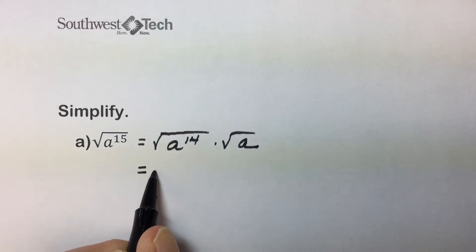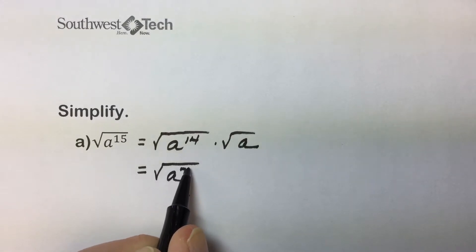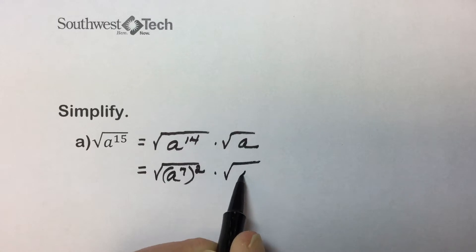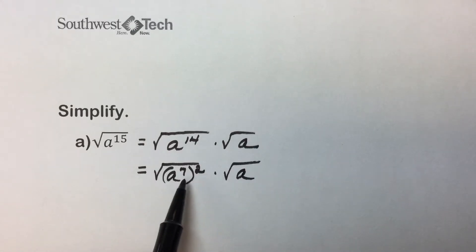Let me illustrate that here. A to the fourteenth is a to the seventh raised to the second. The square root of something squared is that something. And our shortcut, again, is half of that exponent. Half of fourteen is seven.